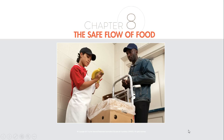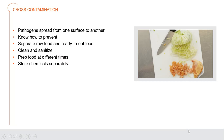Hey guys, Chef Hawks here again. We are on chapter number eight: the safe flow of food. This is all about taking foods from the back door of the kitchen — you can see a delivery guy wanting to drop off product — and it's about us being in control, making sure it gets from that delivery all the way through to the restaurant, paying attention to any possible critical points where there could be danger for that food.